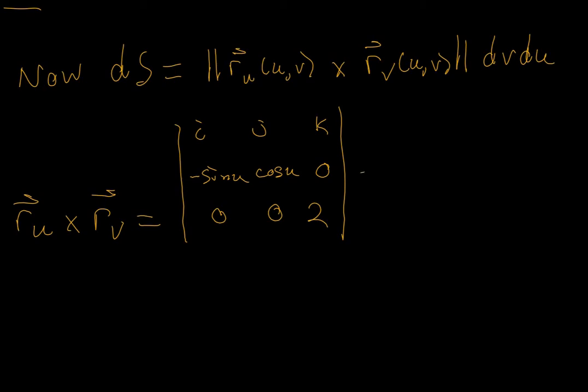If I write this in component form afterwards, the i component is 2 cosine of u, the j component is 2 sine of u, and the k component, or the z component, is 0.